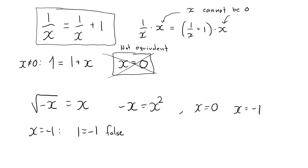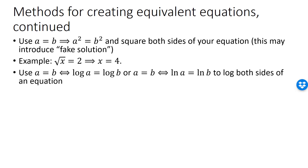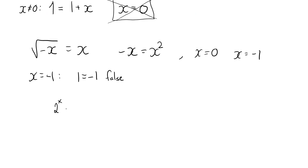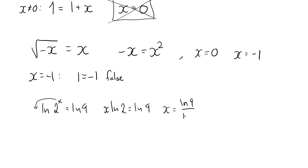We can also create an equivalent equation by taking the logarithm of both sides, as long as both sides are positive. For example, the equation e^x equals 6 is solved by taking the natural logarithm of both sides, giving x equals ln 6. Similarly, taking the natural logarithm of both sides of 2^x equals 9 gives x·ln 2 equals ln 9, or x equals ln 9 divided by ln 2.